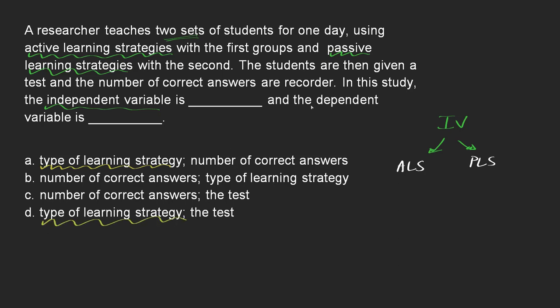Now the next thing that we have to consider is the dependent variable, and the dependent variable is going to be the outcome or what is measured as a result of being in one group or the other.